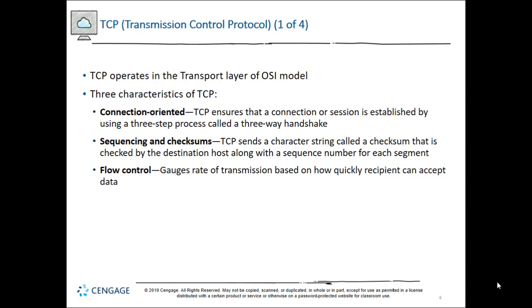The receiving host de-encapsulates the message at each layer in reverse order, undoing everything done on the way. Connection-oriented means best-effort guaranteed delivery. We use something called a three-way handshake — it's like a super overly polite conversation. We also have to sync up to make sure we're always communicating at the same speed, because if you have a gig connection and I have a 100 meg connection, I can't listen at gig speed.